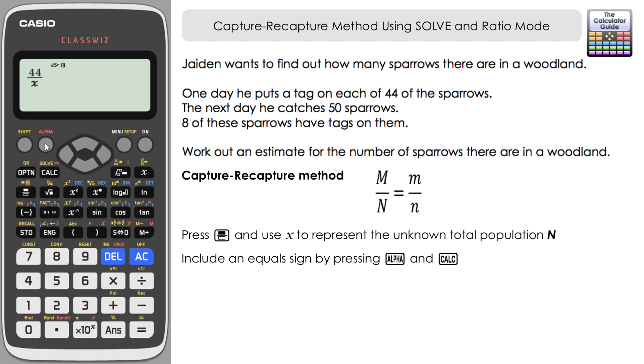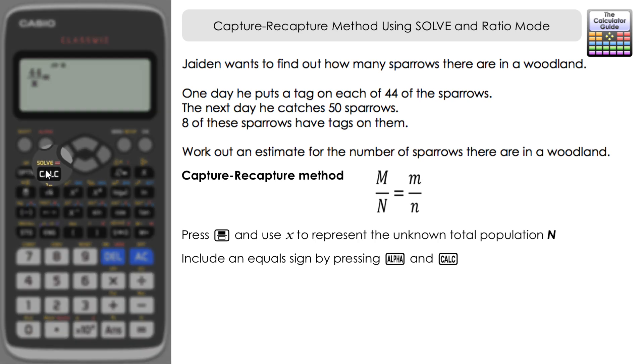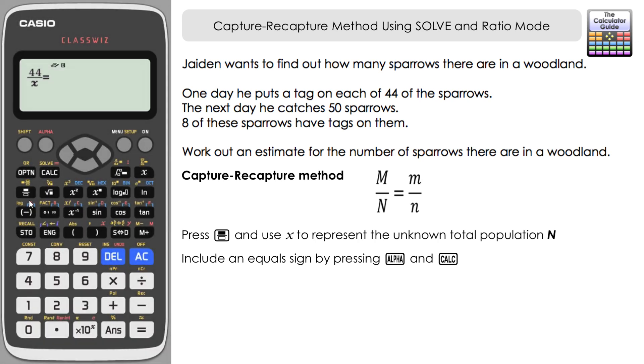Now because we're going to use SOLVE, we want an equals here, but don't press the equals button. We want to include equals as part of what we're writing on the screen. So it's alpha and then calc. The calc button—you can see there's a little red equals above that—so that gives us an equal sign in there.